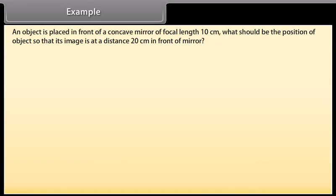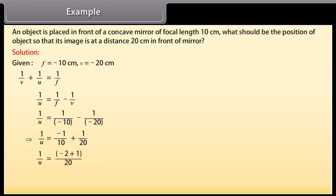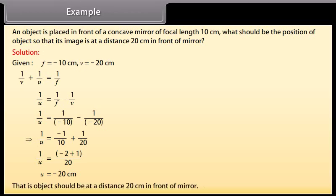Example: An object is placed in front of a concave mirror of focal length 10 cm. What should be the position of the object so that its image is at a distance of 20 cm in front of the mirror? Solution: Given f = -10 cm, v = -20 cm. Using 1/v + 1/u = 1/f, we get 1/u = 1/f - 1/v = -1/10 + 1/20 = (-2+1)/20 = -1/20. Therefore u = -20 cm. The object should be placed at a distance of 20 cm in front of the mirror.